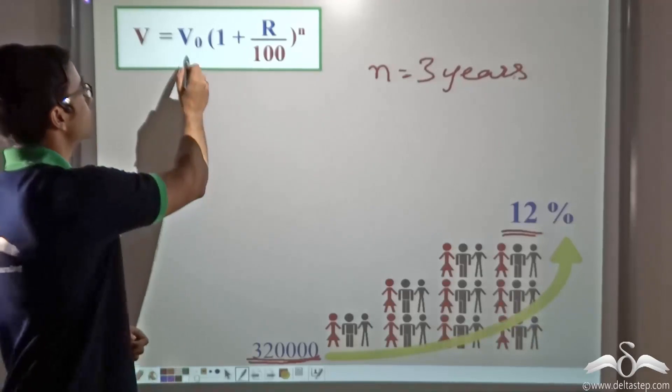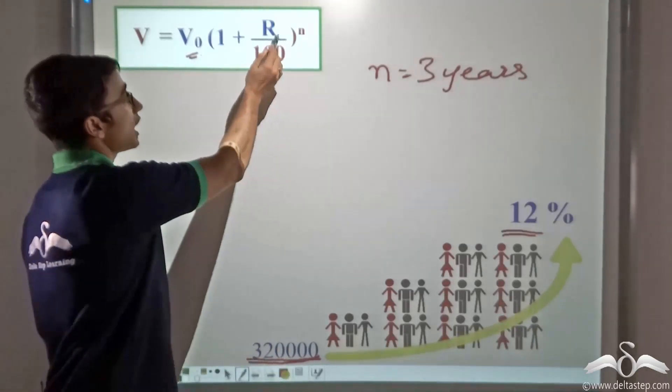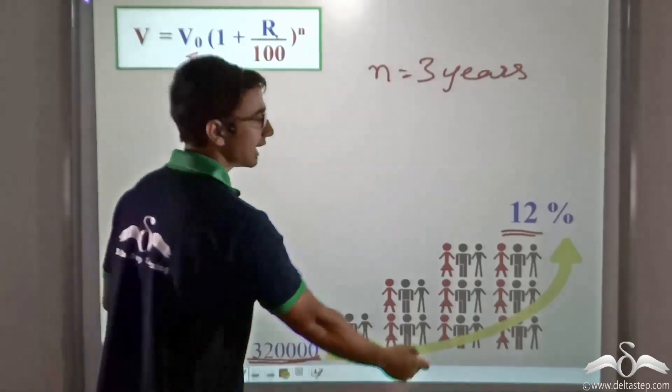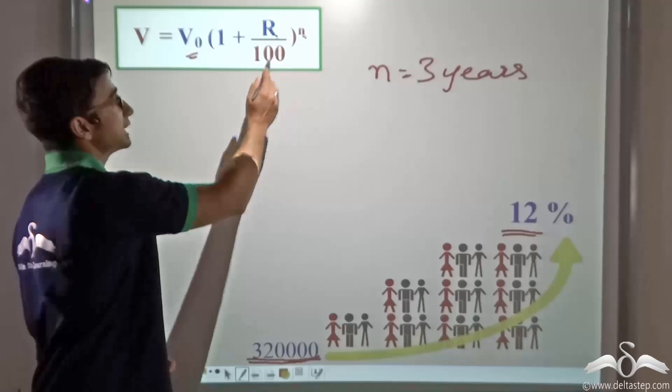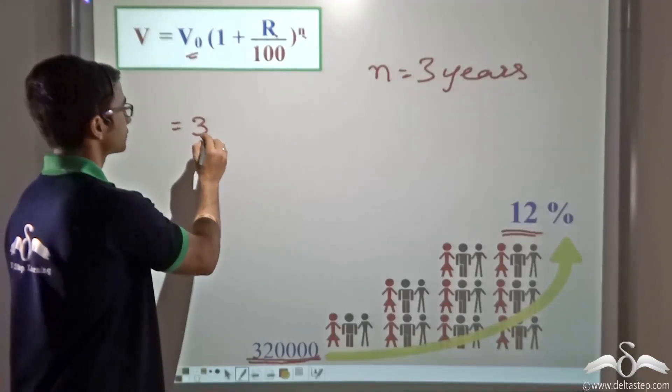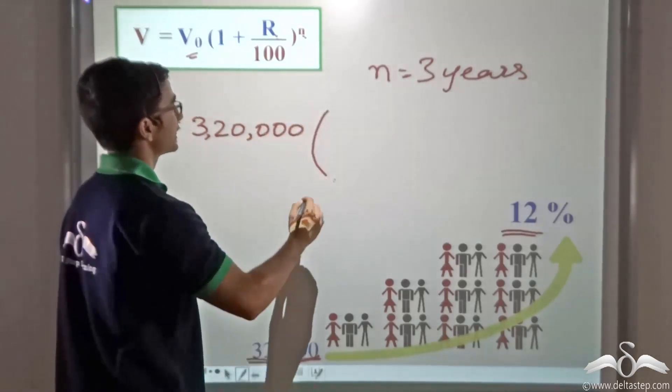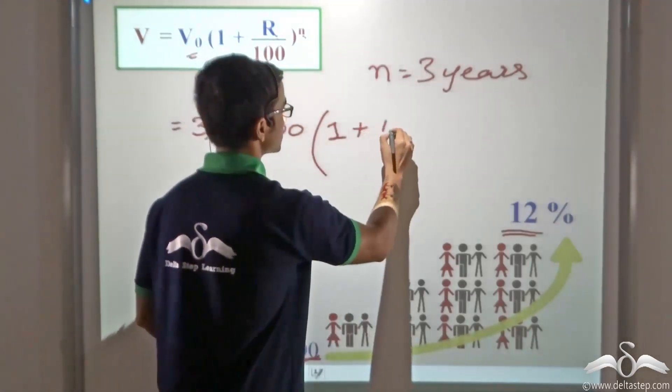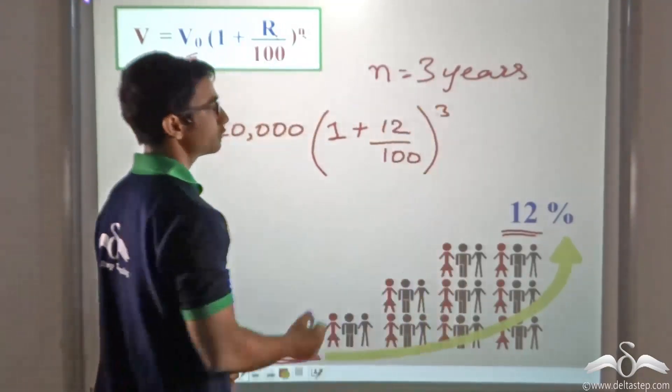Now we have been given the value of V0 as 3,20,000. The value of R that is growth rate as 12 percent, and the value of N that is the time period as 3 years. So I simply replace the values and let's see what I get. So 1 plus 12 by 100 to the power of 3.